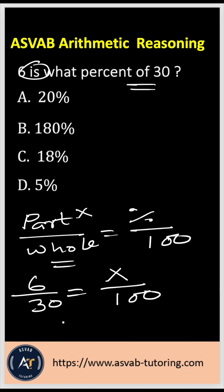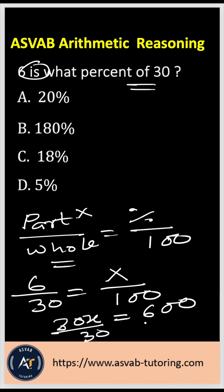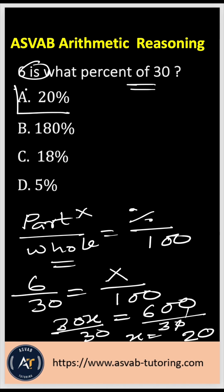If you cross multiply, that gives you 30x equals 600. Divide both sides by 30, and that gives you x equals 20. So the correct answer is 20 percent.